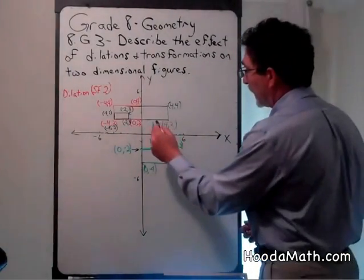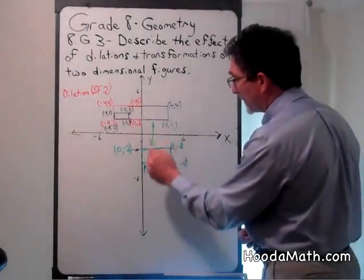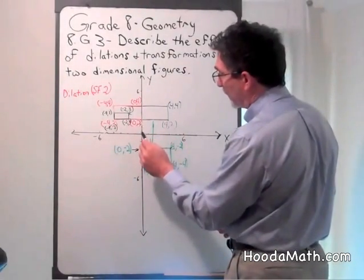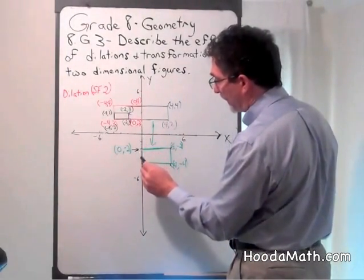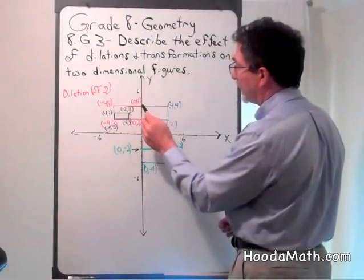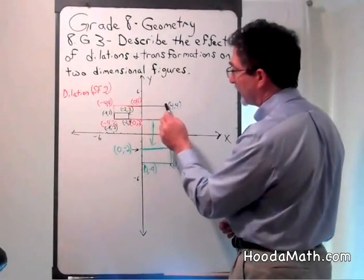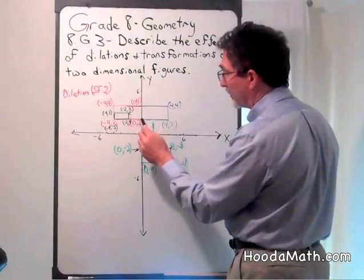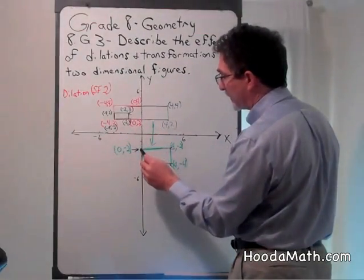And the final step, I'm going to translate down 6 units. If you take a look at this line, it goes down 1, 2, 3, 4, 5, 6. That's the bottom line. The top line will be translated down 6 units as well. 1, 2, 3, 4, 5, 6.